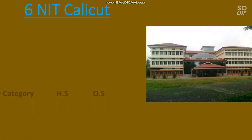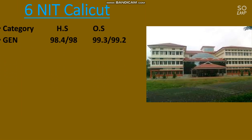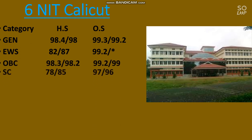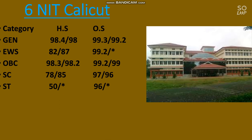Here is number 6, NIT Calicut. The cutoff for the EC branch is: General — 99.3, EWS — 99.2, OBC — 99.2, SC — 97, and ST — 96 percentile required. You can find many useful videos on my channel playlist covering different topics for JEE preparation.